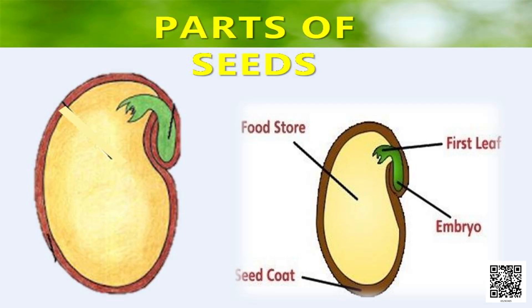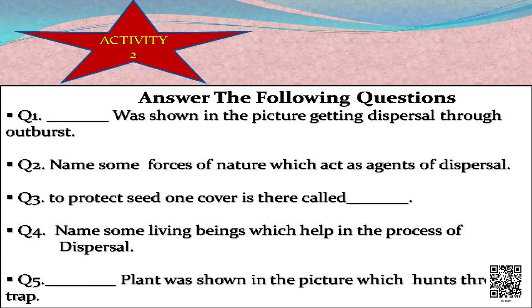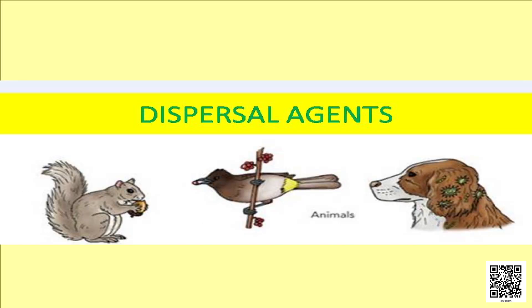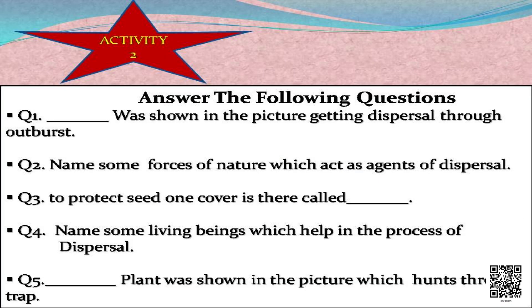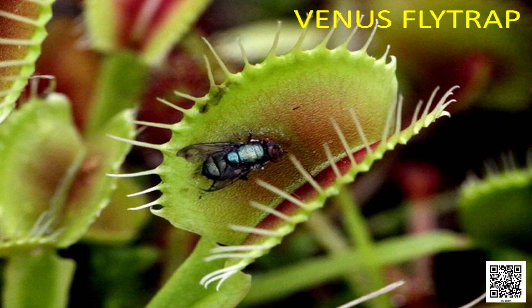Next question: name some living beings which help in the process of dispersal. We have animals and birds — let it be dogs, let it be squirrels, let it be birds. These are all living beings, and along with that, sometimes we human beings are also responsible for this process of dispersal, knowingly or unknowingly. And the last question: which plant was shown in the picture which hunts through a trap? The name itself says it — Venus trap. So here are the answers, and I do hope you all have understood the chapter very well.